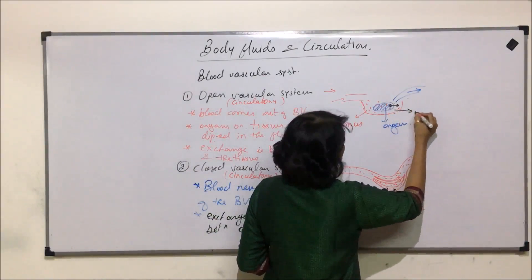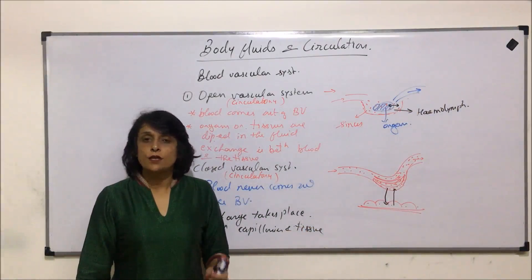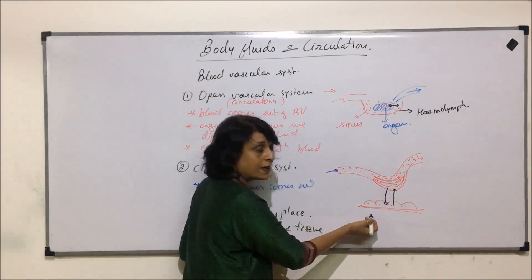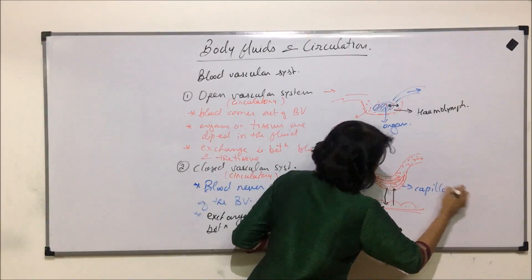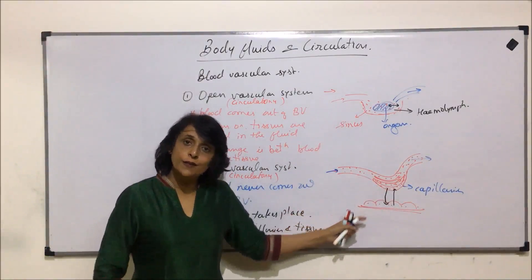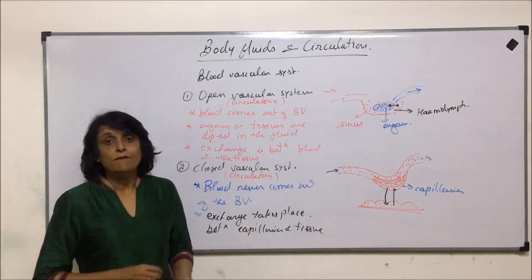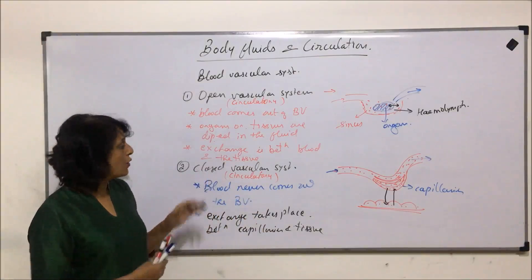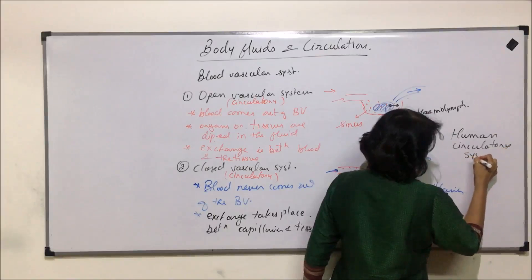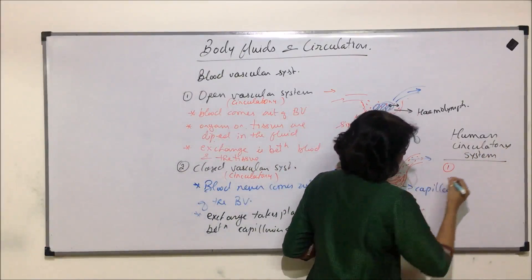In the open system, the exchange is directly between the blood and the organ — the tissue is dipped inside this fluid, which is normally hemolymph. We will discuss this in detail when we talk of the circulatory system in cockroaches. In higher animals like humans, the closed circulatory system applies: one vessel brings the blood, exchange takes place through capillaries, and the vein takes blood away from the tissue.